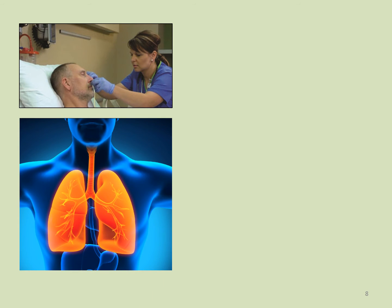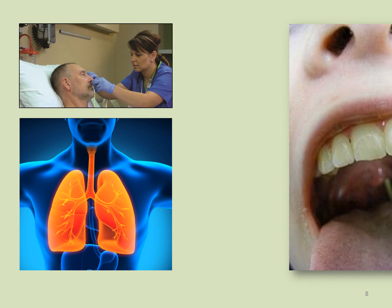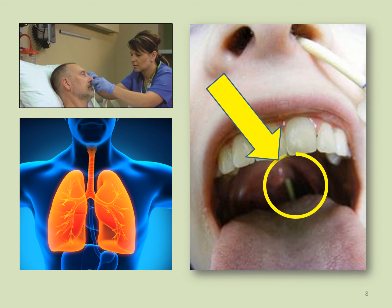Once past the nasal pharynx, the tube may coil up in the patient's throat or pass into the patient's trachea. In these situations, the patient will often cough and gag. The tube must be withdrawn until the tip is in the oral pharynx, then reinserted while the patient flexes the neck and swallows small sips of fluid. Once reinserted, the tube should be clearly seen in the back of the oral pharynx.